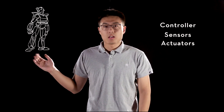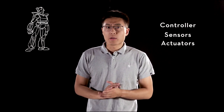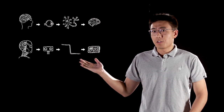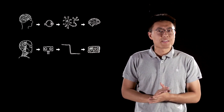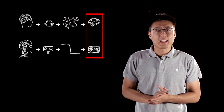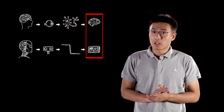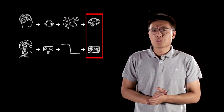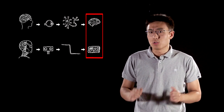So what do robots have in common? Each robot consists of three parts: a controller, sensors, and actuators. For better understanding, we can compare the structure of a robot to a human body. The controller is like the brain — the center of the nervous system where a vast number of processes occur every second. Similarly, a controller on a robot processes instructions and sends signals to instruct the robot how to react and move.